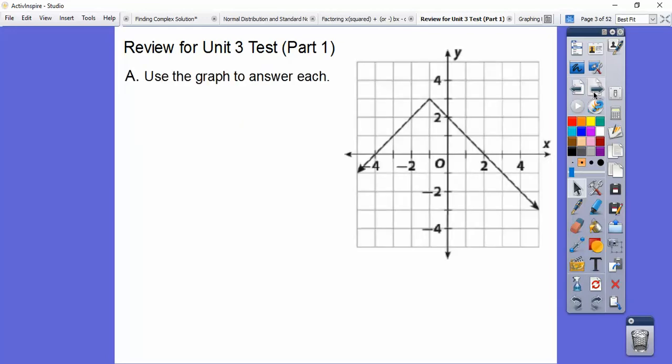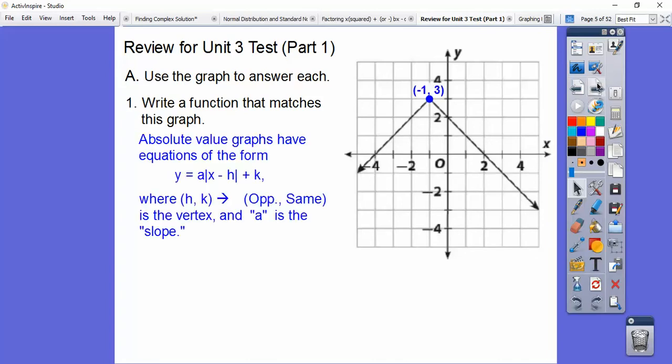We're going to use this graph to answer each. Write a function that matches this graph. This is an absolute value function, and since it's going upside down, it's going to be negative. Right here is hk. Remember, it goes opposite, same right there, so our vertex right there. And then a is kind of like our slope. It goes down 1 over 1, so our slope is negative 1. We just plug in hk, and we're at the negative 1. There's our answer right there.